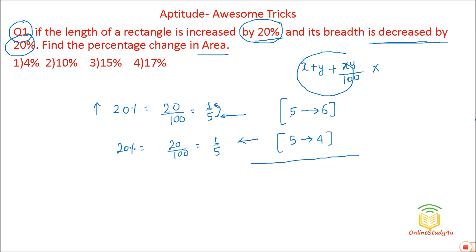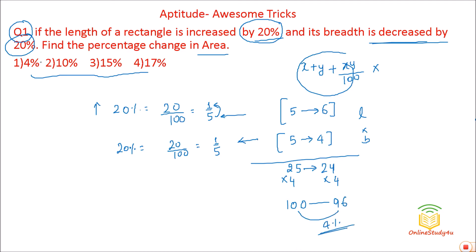5 × 5 = 25, and 6 × 4 = 24. Area equals length × breadth, so the area goes from 25 to 24. To calculate the percentage change easily, multiply both values by 4: 25 becomes 100 and 24 becomes 96. So there is a 4% decrement in area. You could also compute this as (1/25) × 100 = 4%.